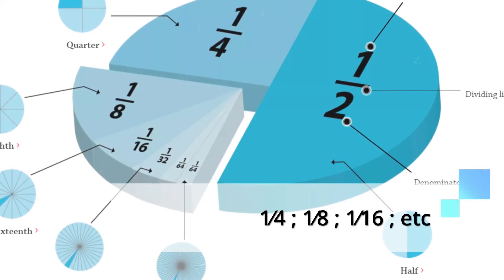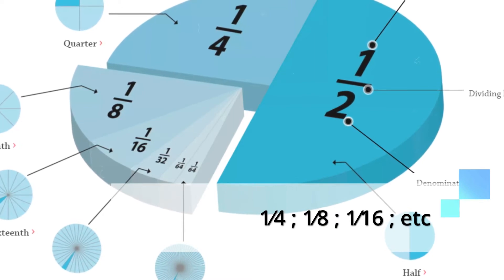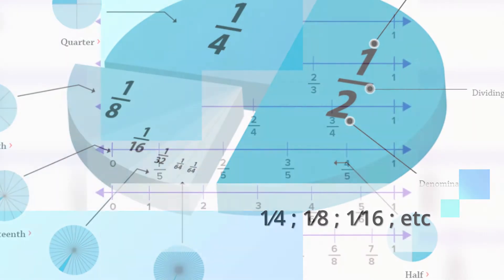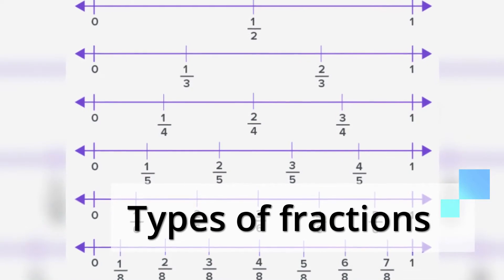So, in this example, we have 1 fourth, 1 eighth, 1 sixteenth, etc. There are at least 4 types of fractions, which we will cover in this video. The first one is unit fractions.